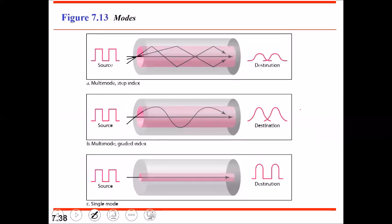Multi-mode is so named because multiple beams of light can move through the core in different paths. Looking at the diagrams, these show multi-mode propagation where you have multiple different light rays propagating at the same time.